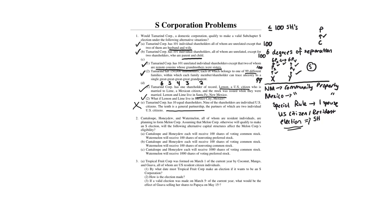Problem two: Cantaloupe, Honeydew, and Watermelon are all resident individuals planning to form Melon Corp. Assuming Melon otherwise qualifies to be an S-corporation, which of the following alternative capital structures affect eligibility? This question gets at the one-class-of-stock requirement. In A, Cantaloupe and Honeydew each receive voting common stock, and Watermelon receives non-voting preferred. You can't have this — you must have one class of stock, and preferred stock by nature has differences in distribution to common. So A fails.